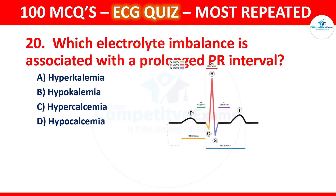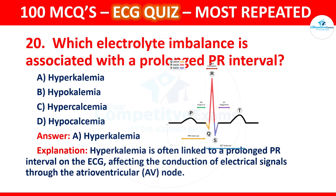Question 20: Which electrolyte imbalance is associated with a prolonged PR interval? Options are hyperkalemia, hypokalemia, hypercalcemia, or hypocalcemia. The correct answer is hyperkalemia. Hyperkalemia is often linked to a prolonged PR interval on the ECG, affecting the conduction of electrical signals through the atrioventricular (AV) node.